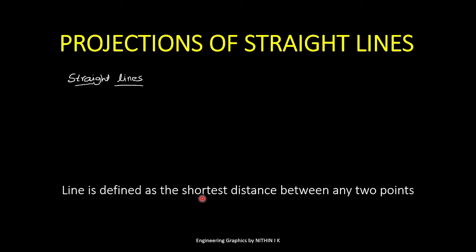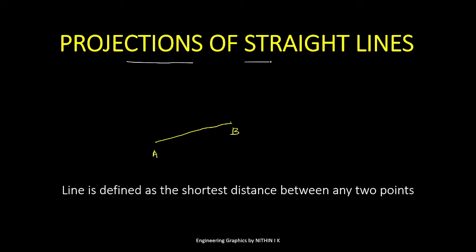A straight line is defined as the shortest distance between any two points. The end points are considered point A and point B. Projections of a straight line means projections of these end points — end point A and end point B.